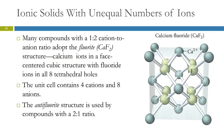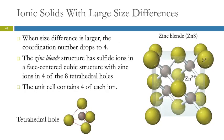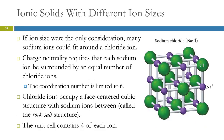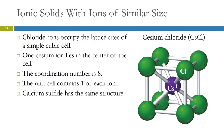To summarize: the fluorite and antifluorite structures occur when you have a one-to-two or two-to-one ratio of cations to anions. The zinc blende structure happens when you have a one-to-one ratio and a large size difference. The rock salt structure happens when you have a one-to-one ratio with some size difference but not a big one. And with similar sizes, you simply have the simple cubic cell.